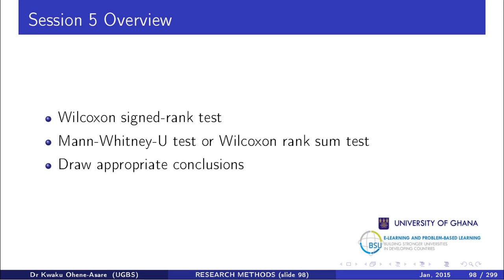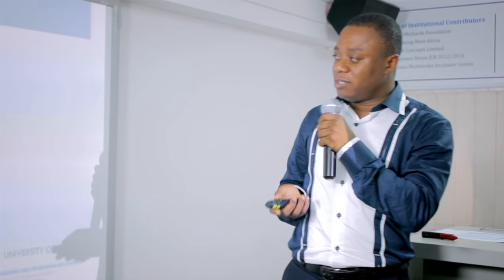There are two non-parametric tests for two samples. One is the Wilcoxon signed-rank test, and the other is the Mann-Whitney U test, also called the Wilcoxon rank-sum test. Notice the difference: Wilcoxon rank-sum versus Wilcoxon signed-rank. The test we are doing for this course is the Mann-Whitney U test, sometimes called the MW test.